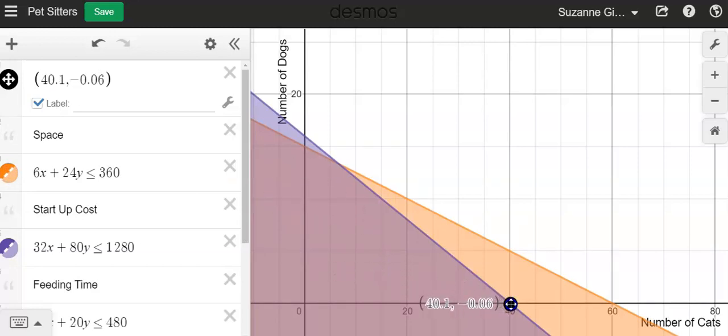Now that also includes if it is on the line. So solid lines, and these are solid lines because it can equal this amount of space and it can equal this amount of money. So this one would cost for 40 cats. That would be exactly $1,280.